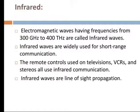Infrared: Electromagnetic waves having a frequency from 300 GHz to 400 terahertz are called infrared. Infrared waves are widely used for short-range communication. The remote controls used in televisions and stereo systems all use infrared communication.